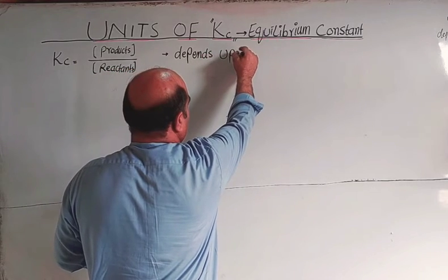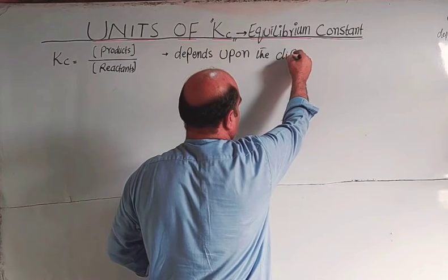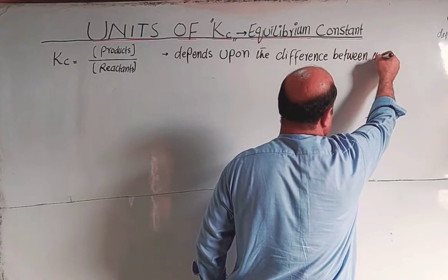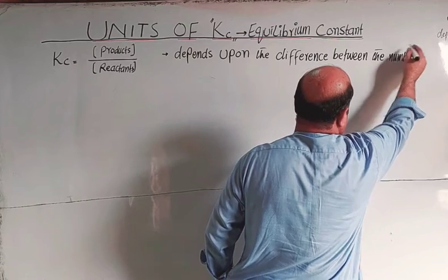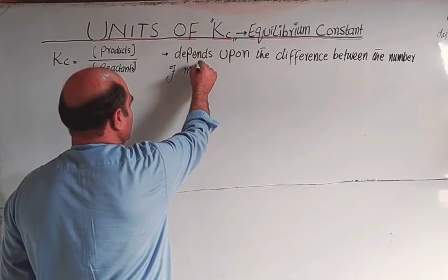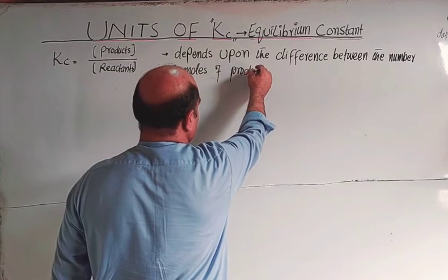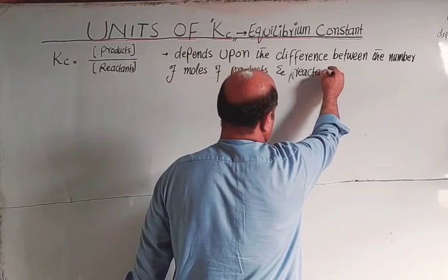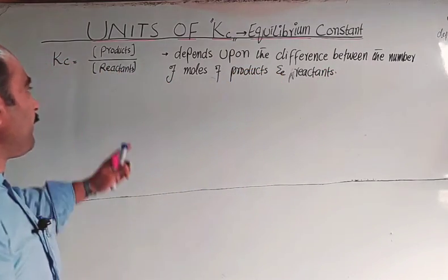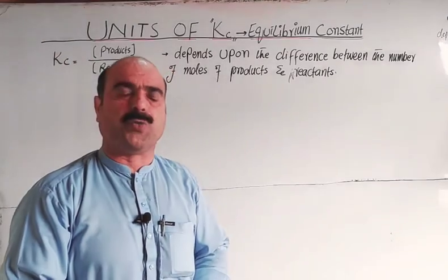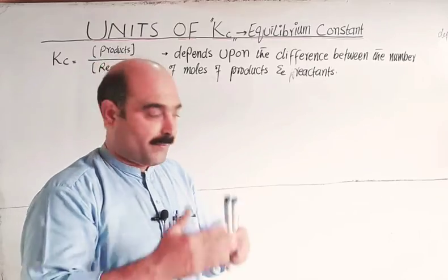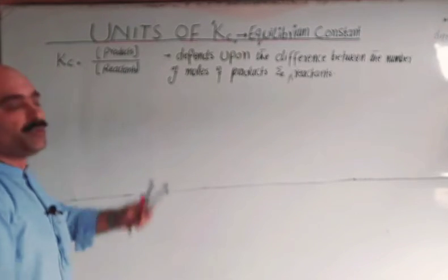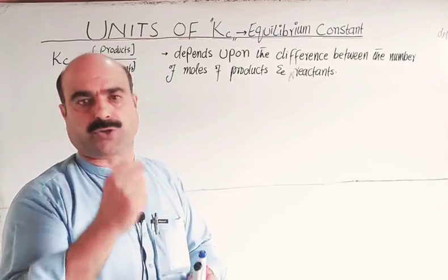Basically, the unit of Kc depends upon the difference between the number of moles of products and reactants. If both the number of moles of products and reactants are equal, then Kc will have no unit, because the units of products and reactants cancel out. When number of moles are equal, we have no units.